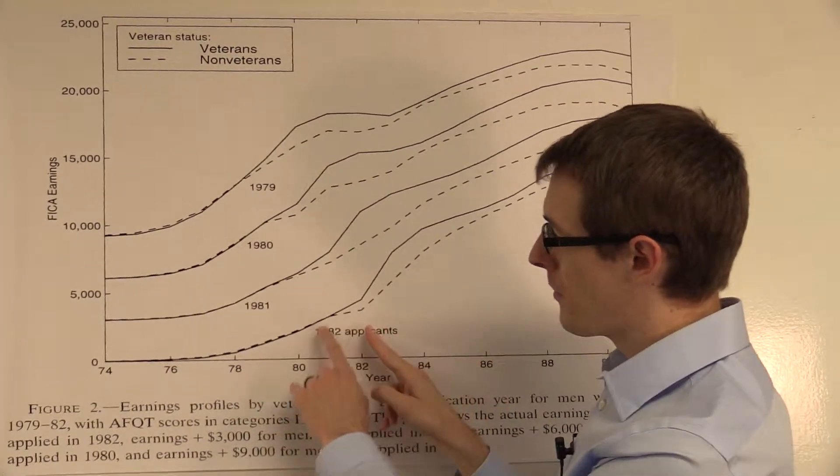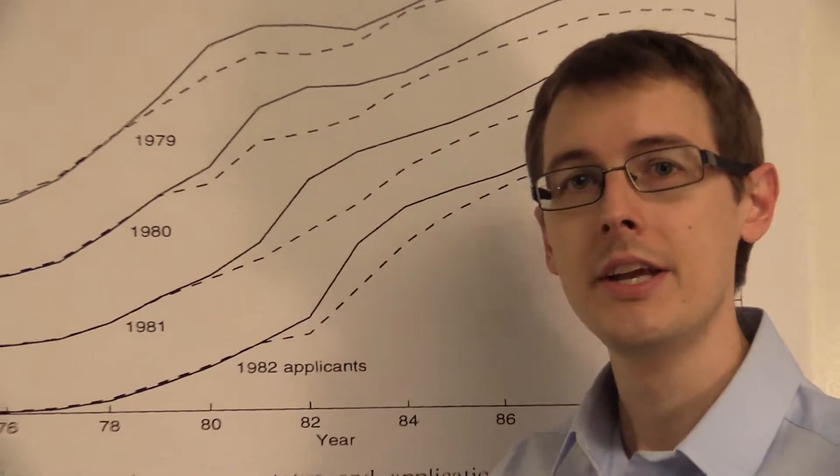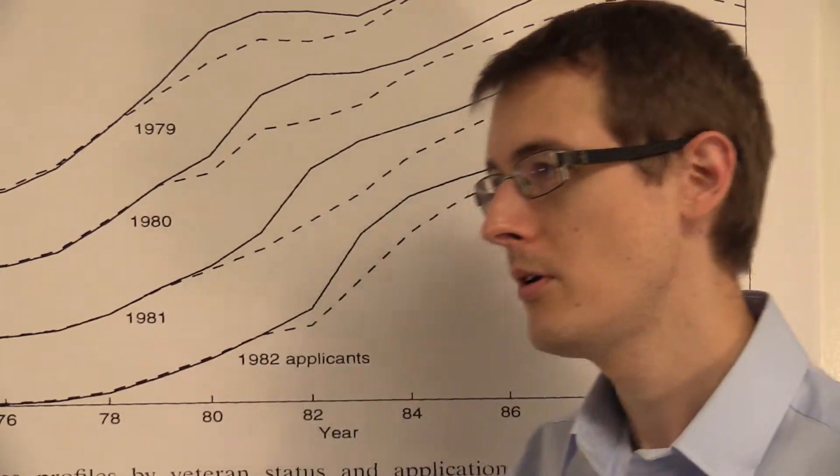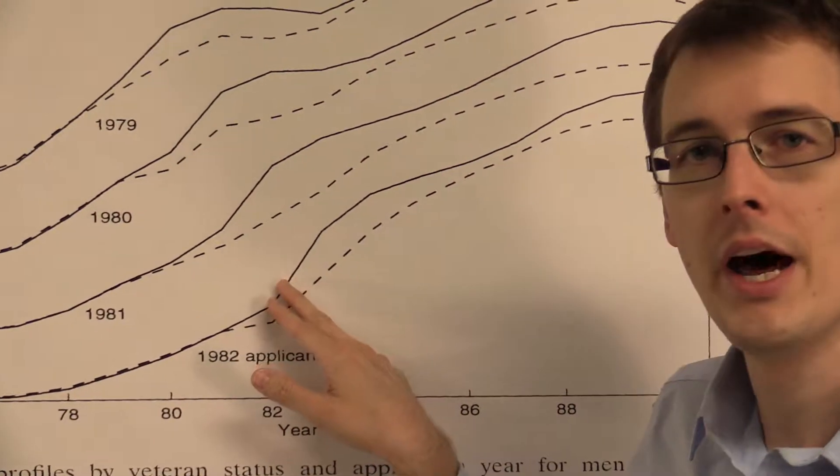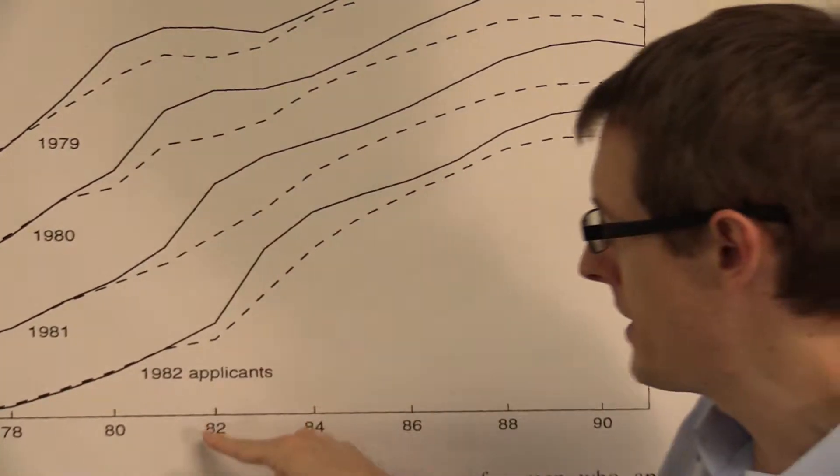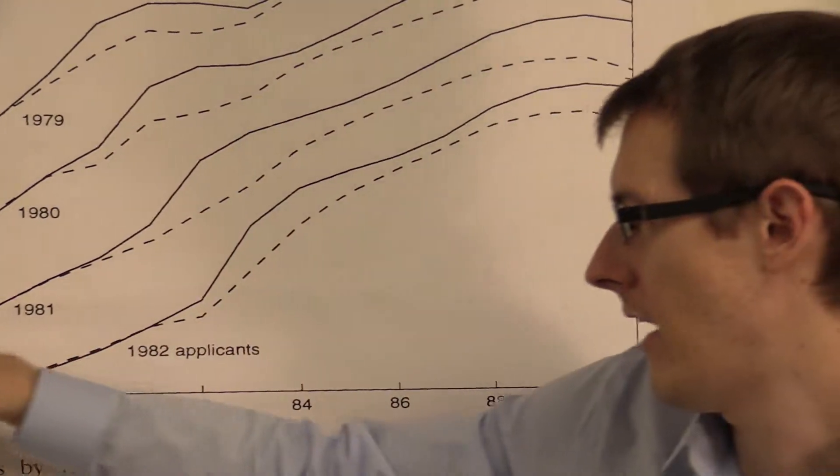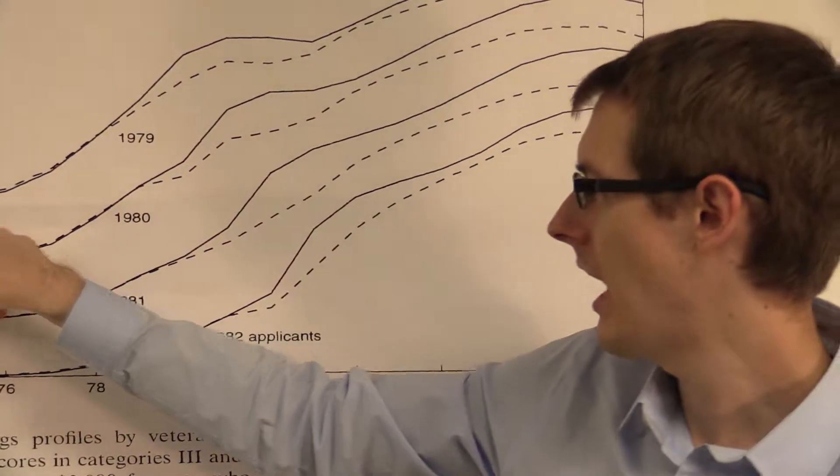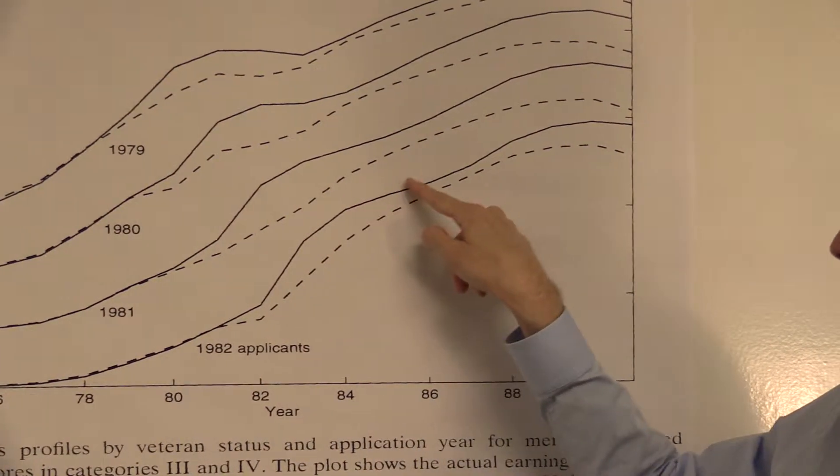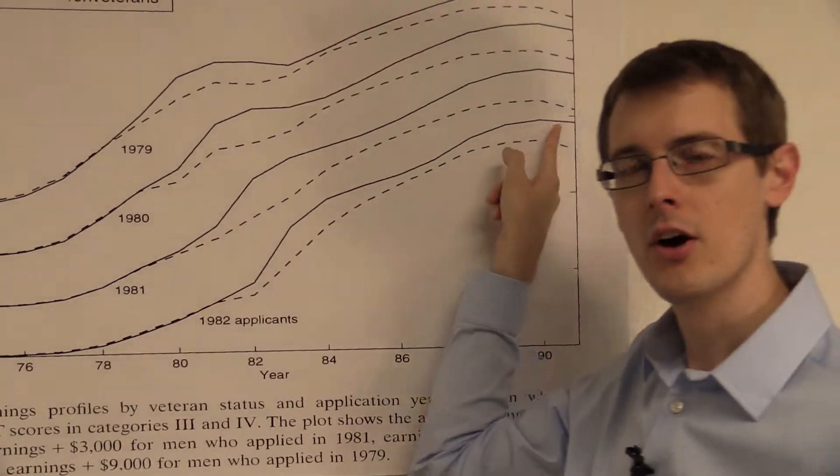Now he's got the group of people in 1982 split into two subgroups: people who joined the military and people who didn't. If you joined the military, your earnings are plotted on this solid line. So we see that in 1982, you made about three thousand dollars, and then that increased to about nine thousand dollars in 1984, and then kept increasing throughout your life.